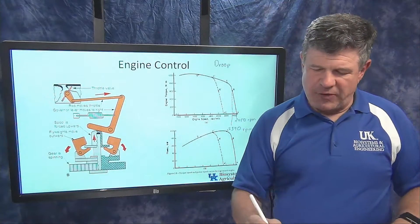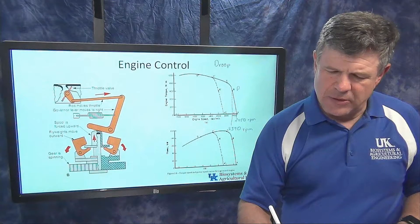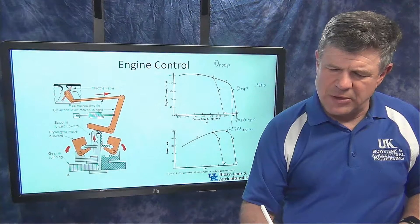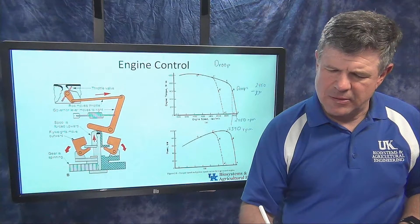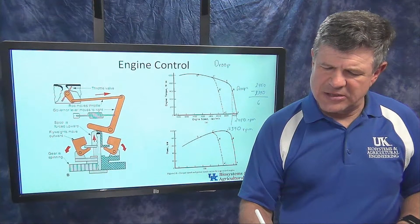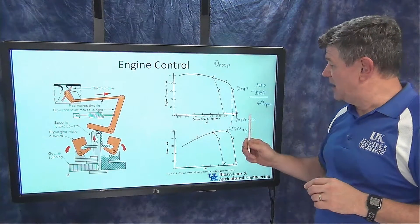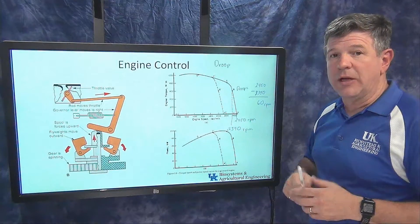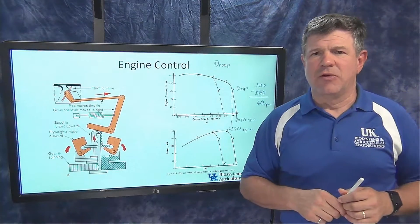So what is the droop? If I calculate the droop for this engine, it equals 2,450 RPM minus 2,390 RPM. Subtracting those numbers gives me 60 RPM as my governor droop. What that's saying is, from the maximum speed at wide open throttle to where the governor is at its limit — that's all it can control, it's out of range — that speed change is going to be 60 RPM. That's the governor droop.